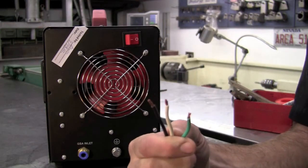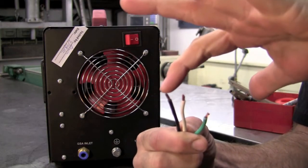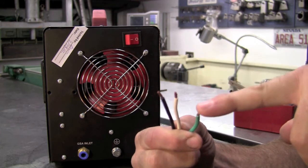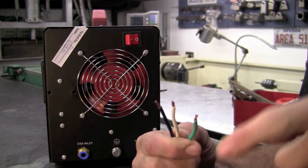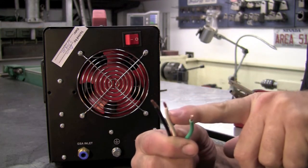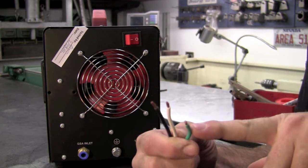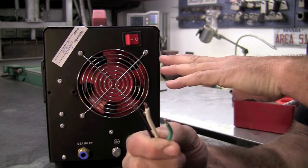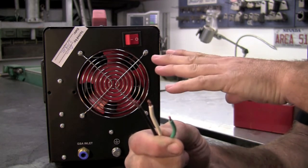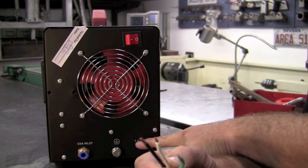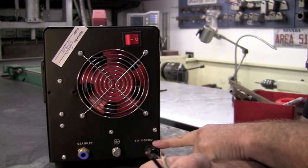For wiring in the 110 mode, black will be your hot, white will be your neutral, and green will be your ground. In the 220 mode, black and white will be your hots, green will be your ground. The machine automatically knows how to switch over inside between the dual voltages. You note on the back of the machine, it does say that it is dual voltage.